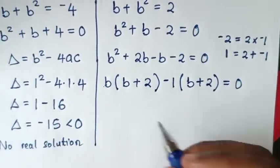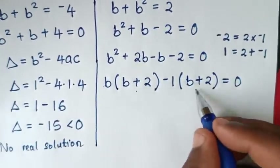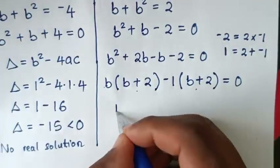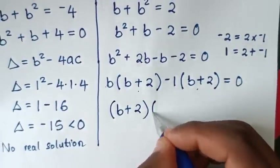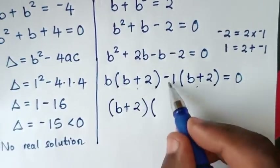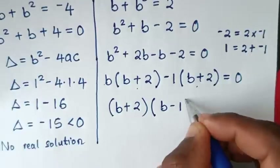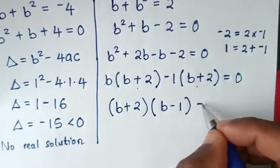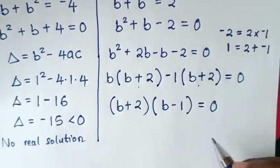Then from here, (b+2) is common, so we take (b+2) out of the bracket: (b+2)(b-1) = 0.